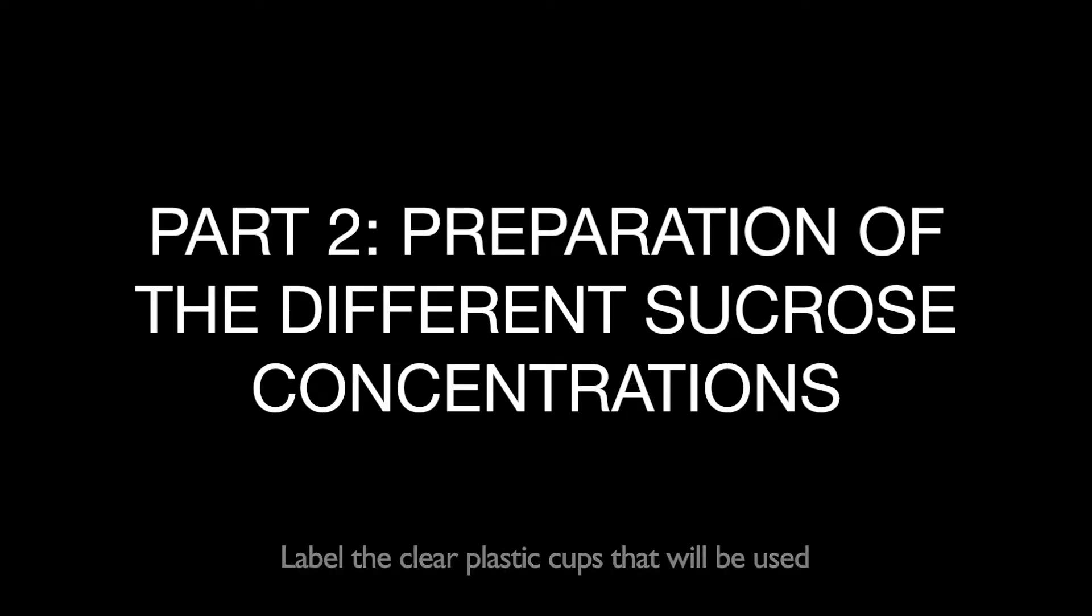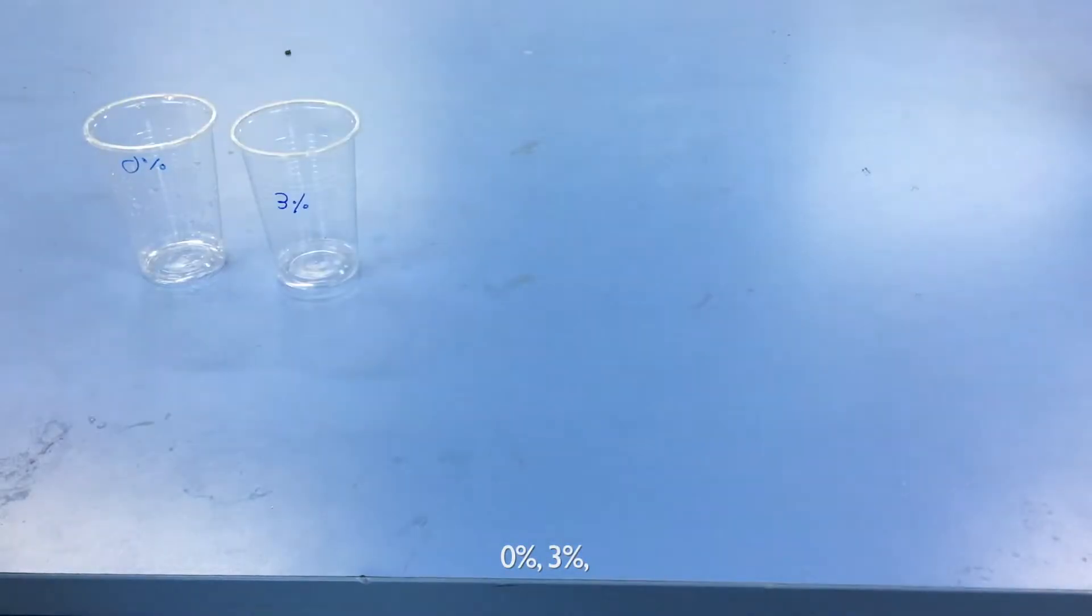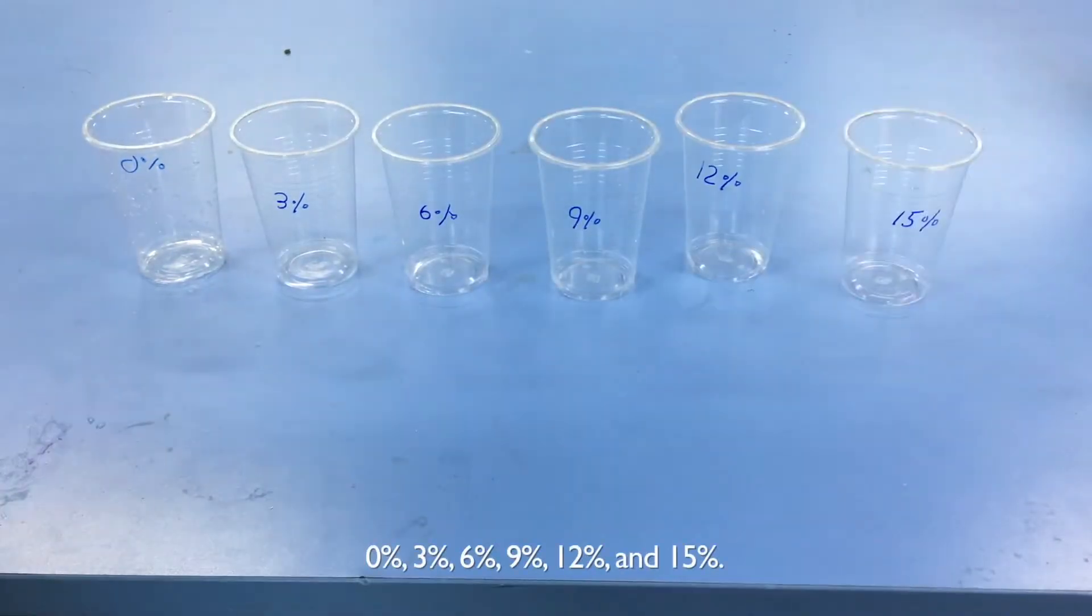Label the clear plastic cups that will be used for the 6 different sucrose concentrations: 0, 3, 6, 9, 12, and 15%.